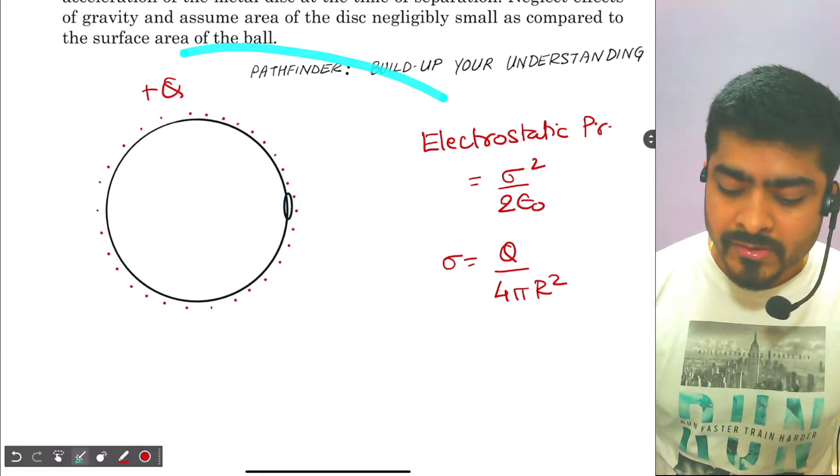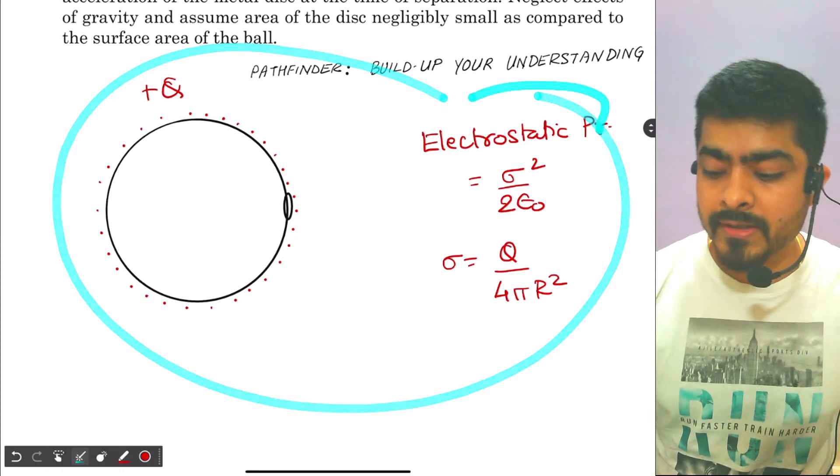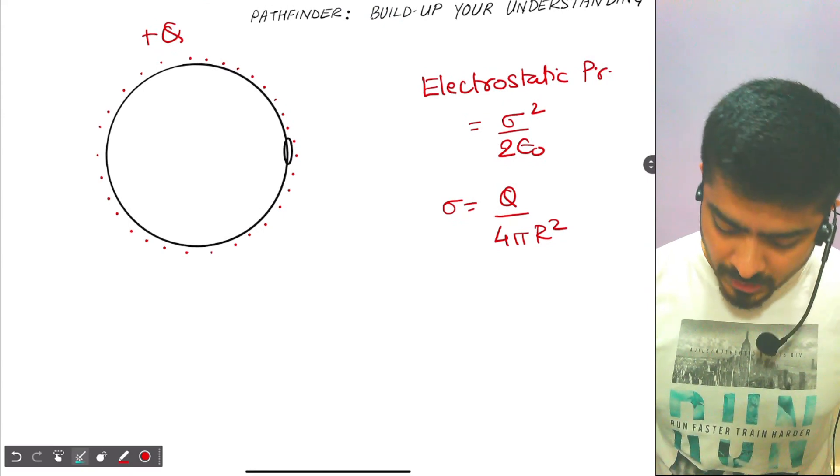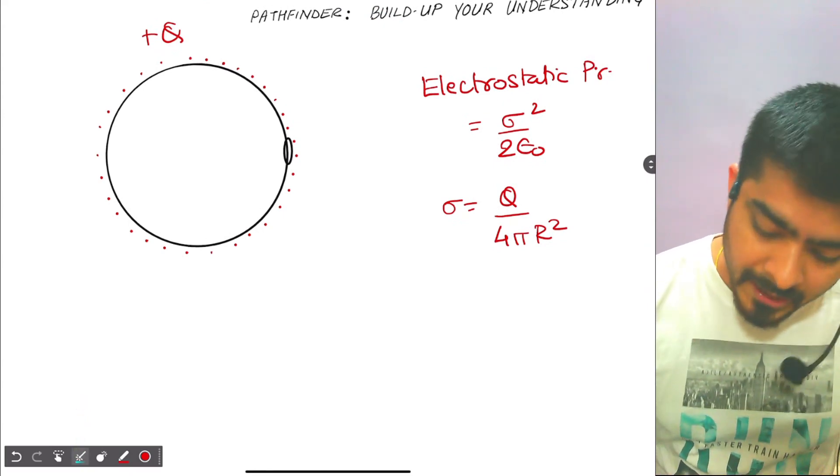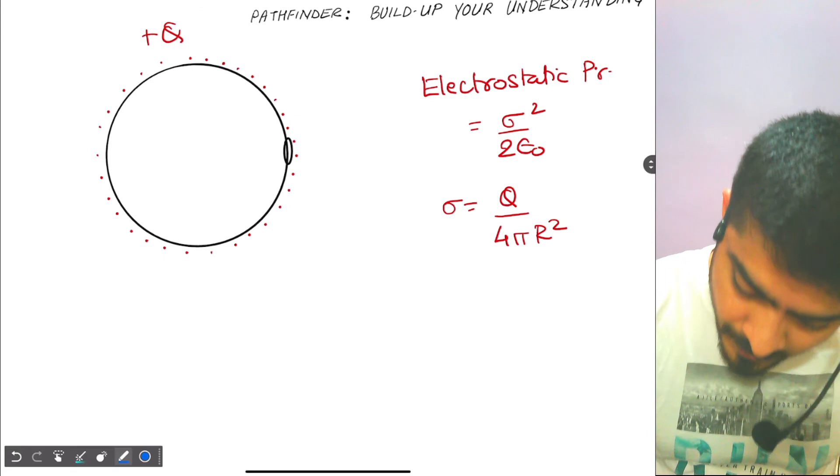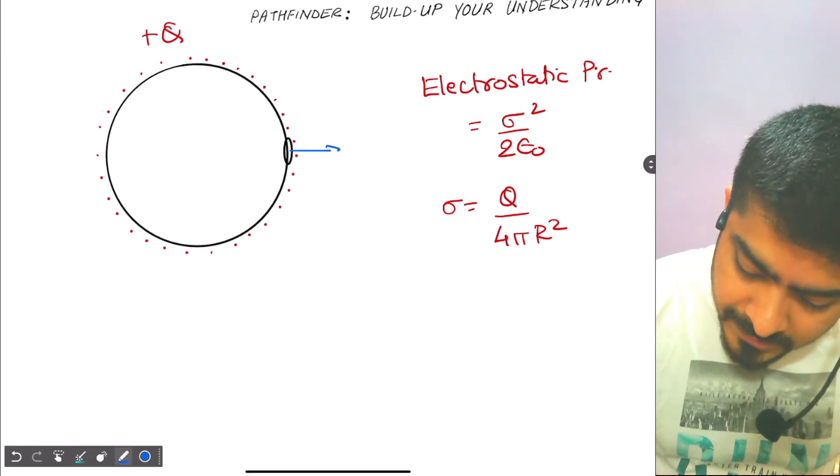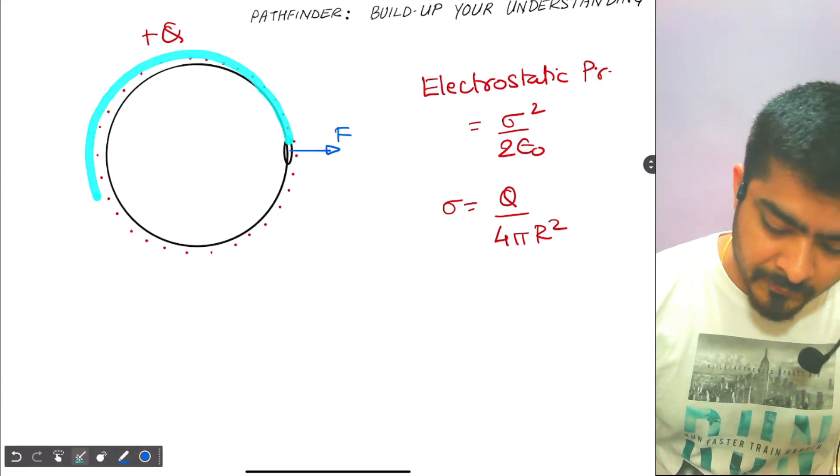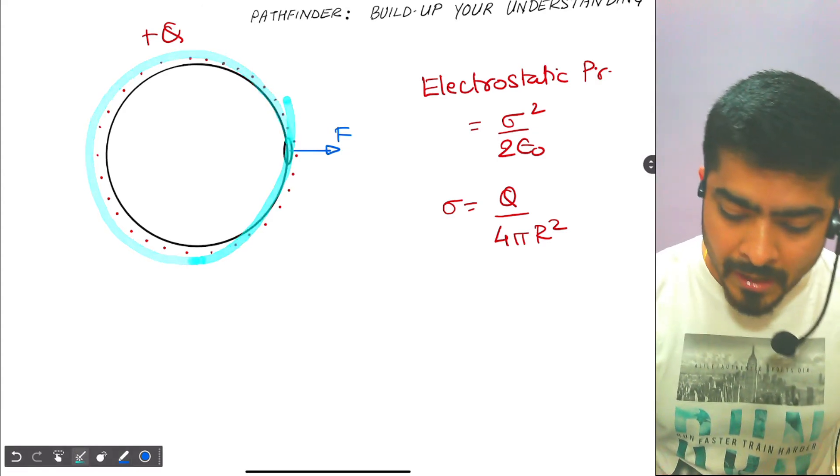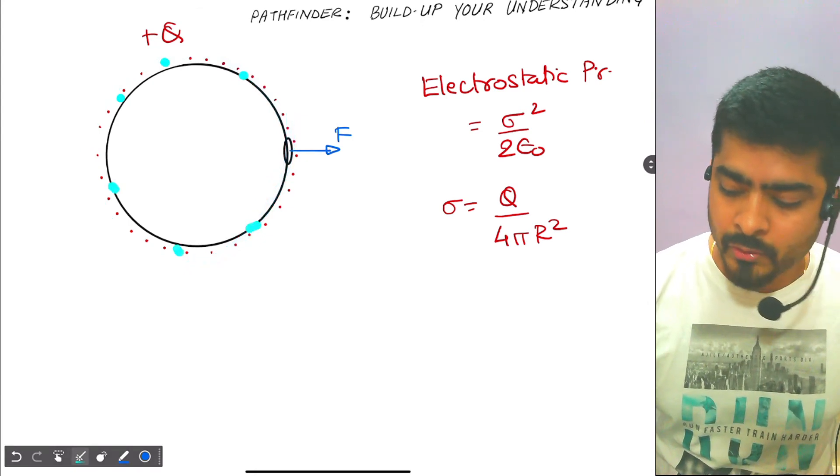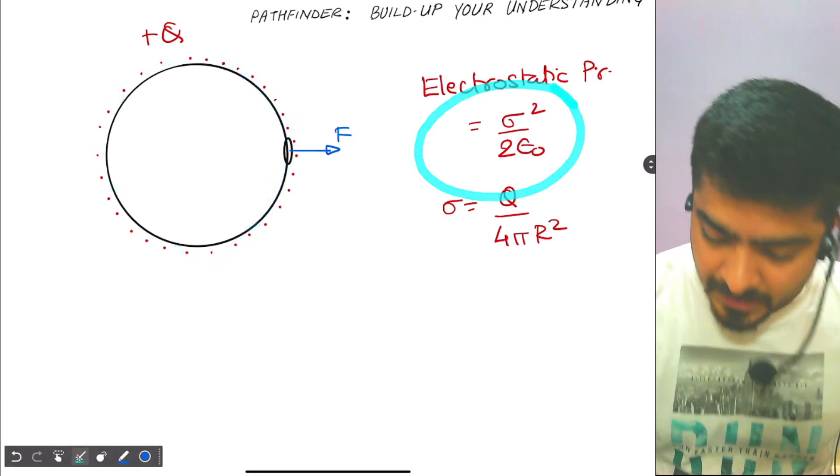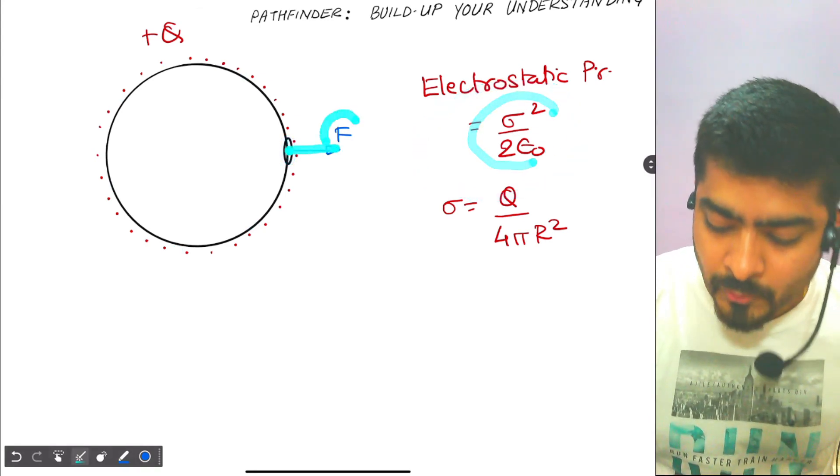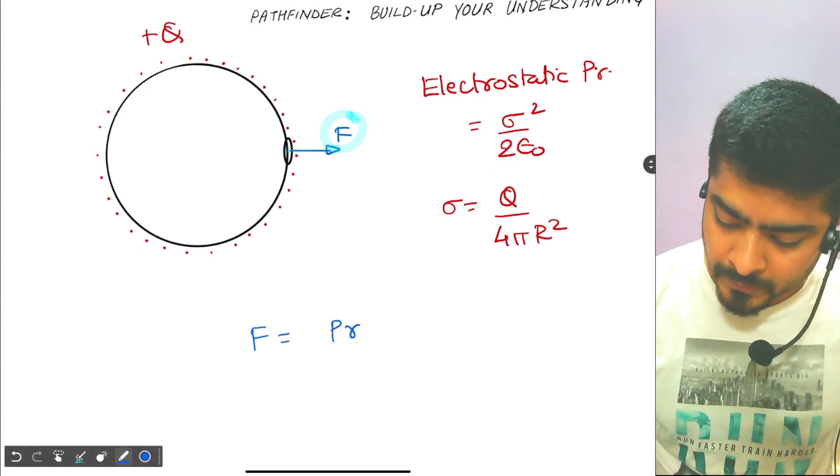So we could solve this question based on how we derived electrostatic pressure. You must have seen the derivation; I am not going into the derivation. I will just write down directly that the force on this disc will be - this is your entire sphere. So everywhere on the sphere you are experiencing this much pressure. That means on the disc also you have the same pressure. So the disc will experience a force F, and F will be equal to pressure multiplied by area.